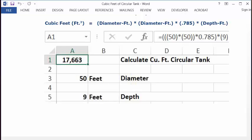In the address bar, you put equal sign, three open parentheses, 50, close parentheses, multiplication key, open parentheses, 50, two close parentheses, multiplication key, 0.785, close parentheses, multiplication key, open parentheses, 9, close parentheses, and then press enter.